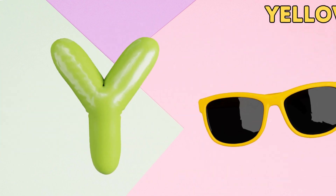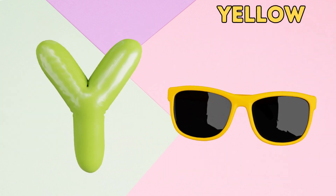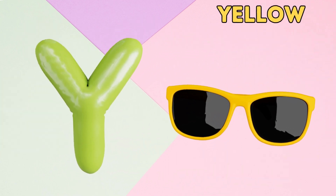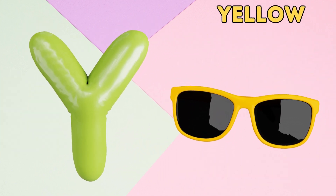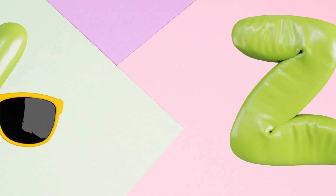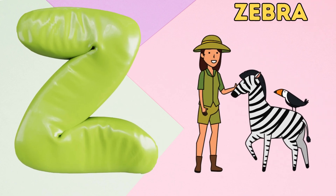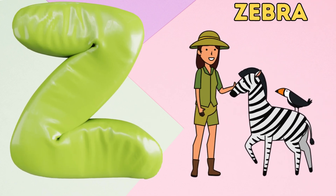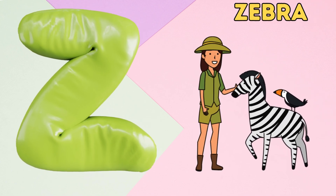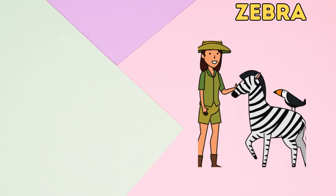Y is for yellow, y-y-yellow. Z is for zebra, z-z-zebra.